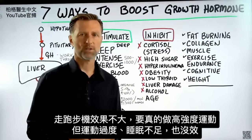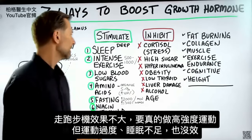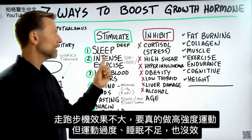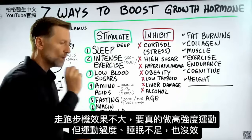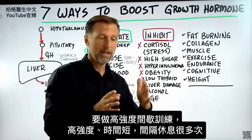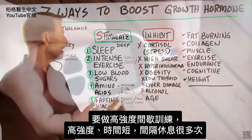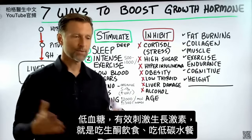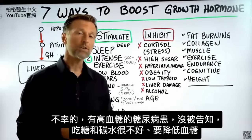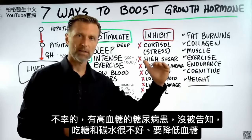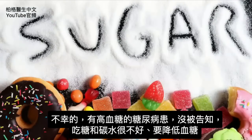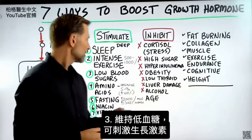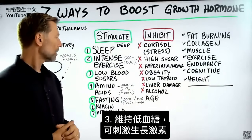Just walking on the treadmill is not going to do much for growth hormone. You're going to have to really use a lot of intense effort. But if you overtrain and don't get enough sleep, it's probably not going to work. So we want to do intense exercise without overtraining — this is why we want to do high-intensity interval training: short duration, lots of rest. Low blood sugars are another powerful way to stimulate growth hormone, and that's on the keto plan, on a low-carb diet.